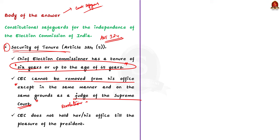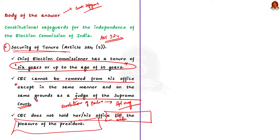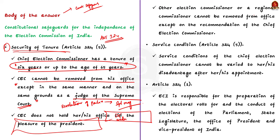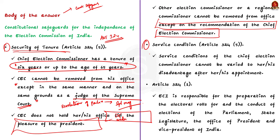This resolution for impeachment should be passed by special majority in both Houses of Parliament. Moreover, the reason for impeachment can be either on the ground of proved misbehaviour or incapacity. Thus, the CEC does not hold office under the pleasure of the President even though appointed by the President. Not just the CEC, the other Election Commissioners also have security of tenure — any other election commissioner or regional commissioner cannot be removed from office except on the recommendation of the Chief Election Commissioner. This is the first safeguard. The second is regarding service conditions: the service conditions of the Chief Election Commissioner cannot be varied to their disadvantage after appointment. Both these provisions are explicitly mentioned in Article 324, Clause 5 of the constitution.